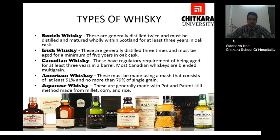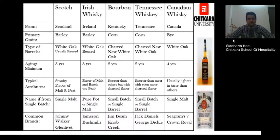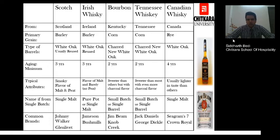Here is a comparison table differentiating whisky types. Scotch is made in Scotland, the primary grain is barley, white oak barrels are used, aging period is three years, and the flavor is smoky with malt and peat. A single batch from a single grain is called single malt; common brands are Johnnie Walker and Glenlivet. Irish whisky is made in Ireland, major ingredient is barley, white oak casks are used, also aged three years, with a flavor of malt and barley. Pure pot or single malt styles are used; Jameson and Bushmills are examples.